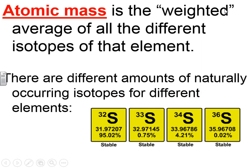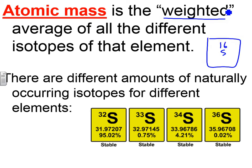The atomic mass is the average, but it's a special type of average — it's called the weighted average of all the different isotopes of that element. To show you this, if you take a look at sulfur on the periodic table, sulfur element number 16 has a mass of 32.07. That 32.07 is the weighted average of all the sulfur out there.